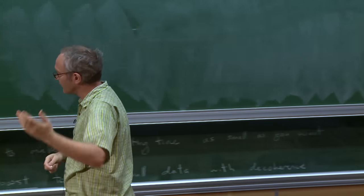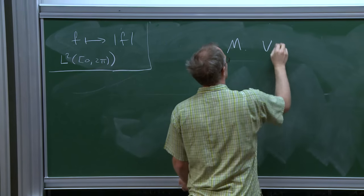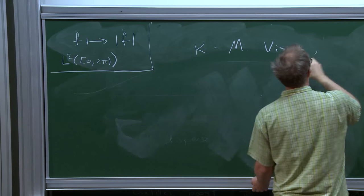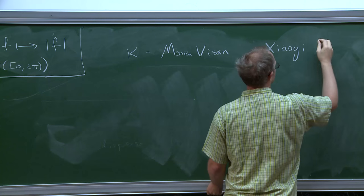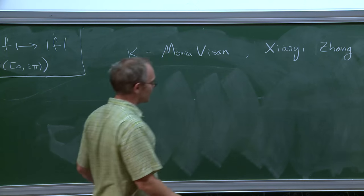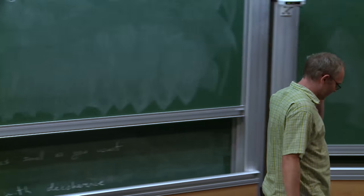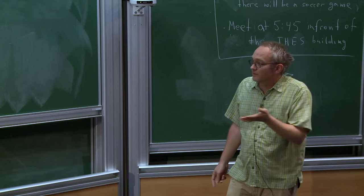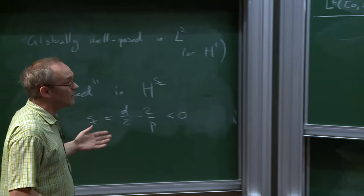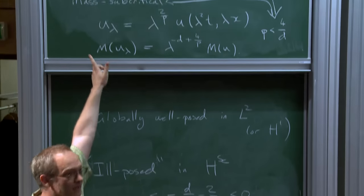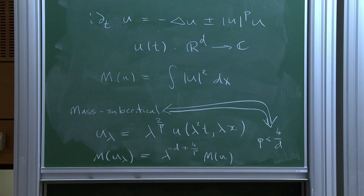Why am I thinking about this? Because it plays a role in some joint work with Monika Vişan and Xiaoyi Zhang, which is about non-squeezing. Monika's talked in a couple of places—here and in Berkeley—about the fact that we've proved non-squeezing for the mass critical case. Part of what I want to say is: don't apply the methodology there here; there is a more direct argument, which uses some of the ideas in that paper but cuts out some of the horrors that come from criticality.